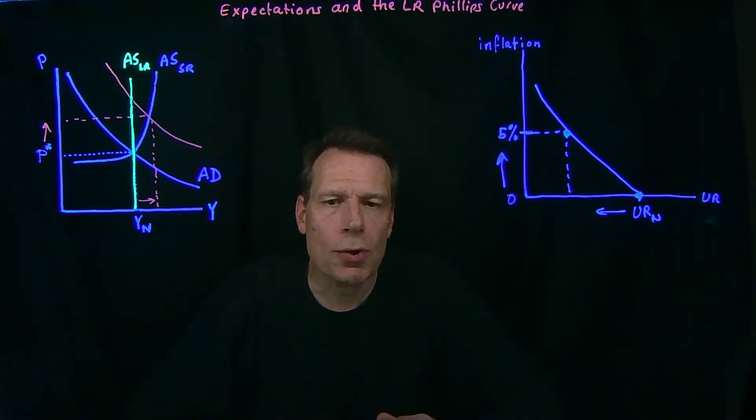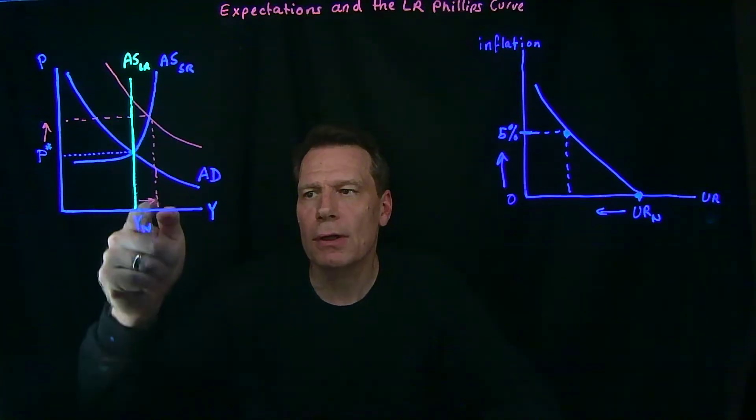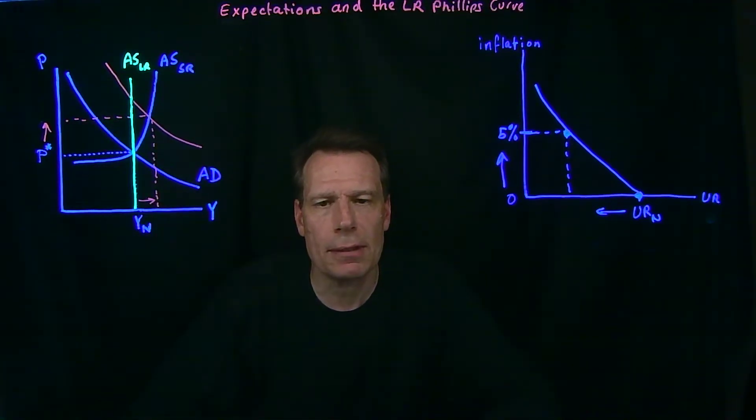But we also know that the long-run aggregate supply curve is perfectly vertical at the natural level of GDP, which means that in the long run the economy has to return back to that natural level. So how does that happen?